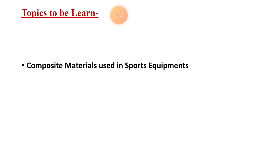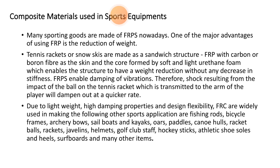The composite materials used in sports equipment come in various types. These types include graphinate composites, nylon fibre composites, unsaturated polyester composites, carbon fibre composites, epoxy resin composites, and fibre reinforced polyester composites. These are used as composite materials for manufacturing sports equipment.